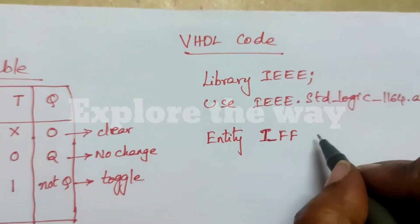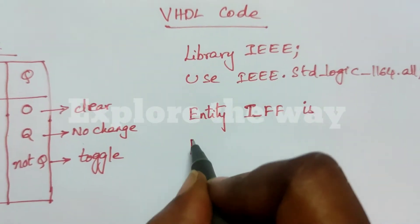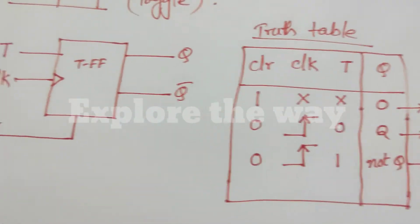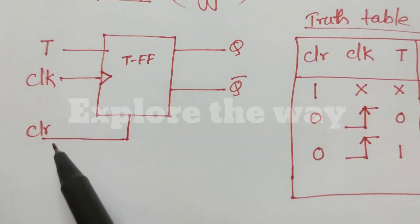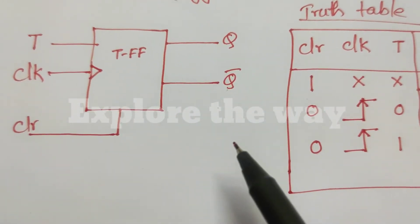T flip-flop is. Now write the ports. What are the ports? In the symbol, T clock clear, these three are the inputs. Q, Q bar are outputs.